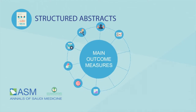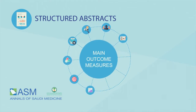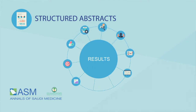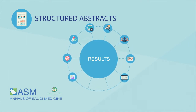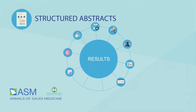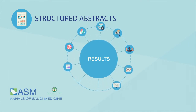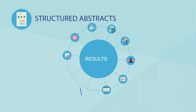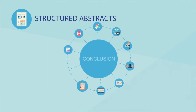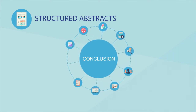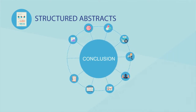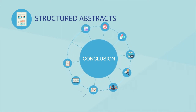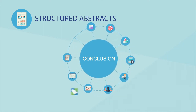Main outcome measures: the primary endpoint of the study. Results: pertinent findings in a logical sequence. Conclusion: report in one sentence the most important conclusion inferred from the data.